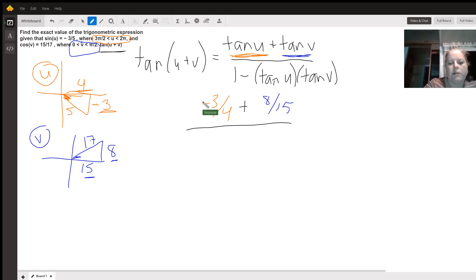And those numbers are the same numbers we use in the bottom. So for tangent of u, we would have negative 3 fourths. And for tangent of v, we would have 8 fifteenths.